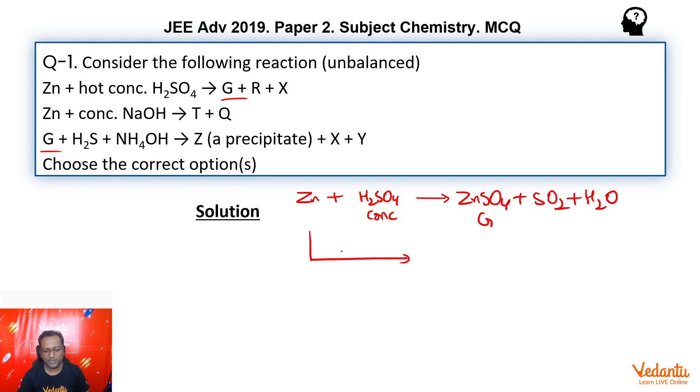Now, if we react zinc with concentrated NaOH, because it being amphoteric metal, it will liberate hydrogen gas with NaOH as well, forming sodium metazincate Na2ZnO2. So one of this is T, the other is Q going ahead.